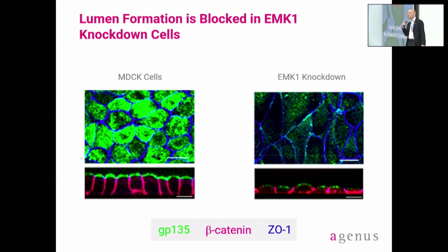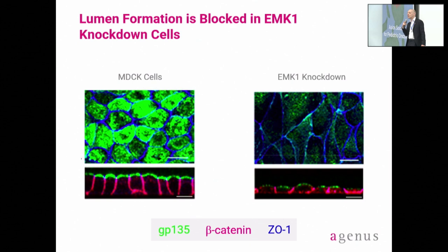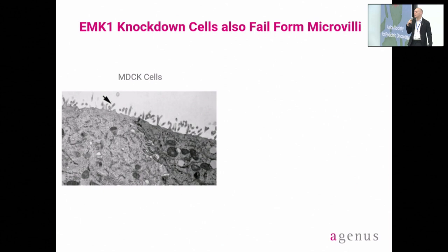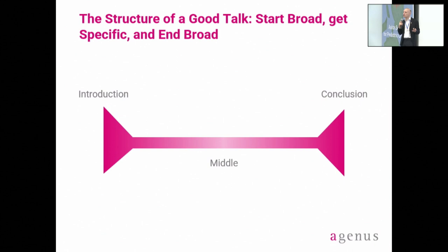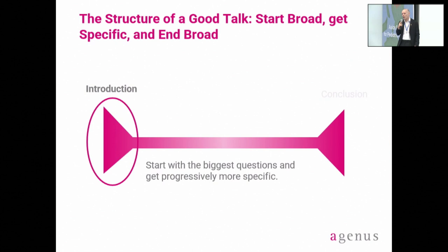This is showing knockdown of that particular gene, and you can see a phenotypic shape change. When you knock down this gene, these cells also fail to form little tubes, little microvilli — again, very phenotypically obvious. So when you're giving a talk, we also need to think about the structure. You start broad, you then become specific, and you end broad. You should start generally with the biggest questions and then get progressively more specific and detailed.